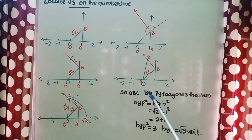So let us find out the length of hypotenuse by using Pythagoras theorem. In triangle OBC, hypotenuse square equal to base square plus height square, that is equal to root 2 square plus 1 square.